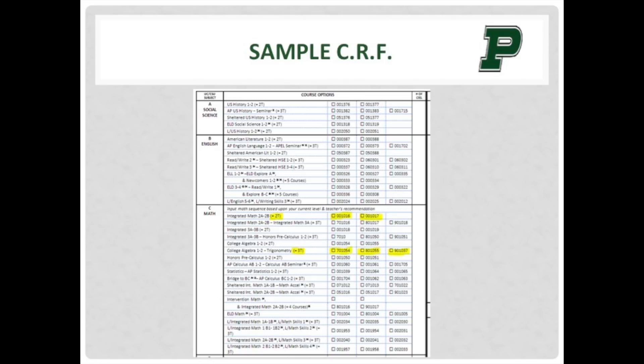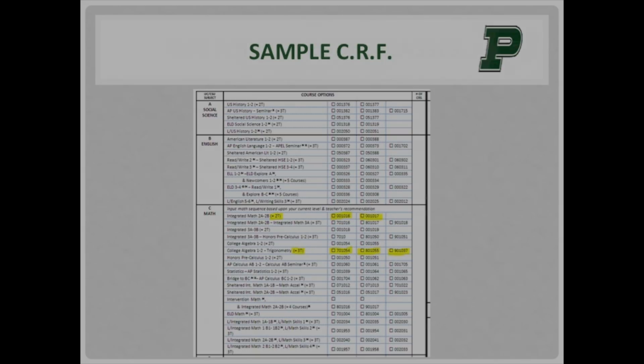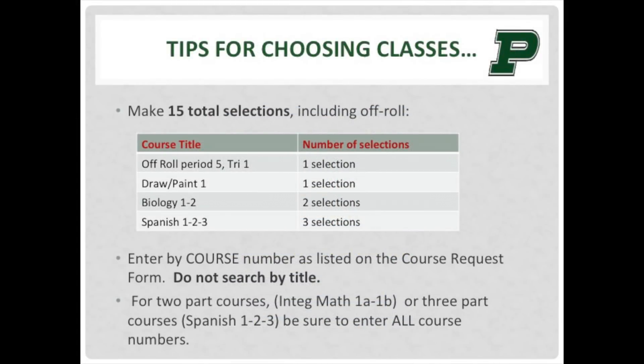You have been provided a course request form, also known as CRF, for your specific grade level, detailed instructions, and your transcript. The course request process has two parts. One, complete a course request form along with the required signatures from you, a parent, and your teachers. Two, input your requested courses through the registration link provided in your instructions. Both steps are necessary to ensure that your requests are understood and appropriate.